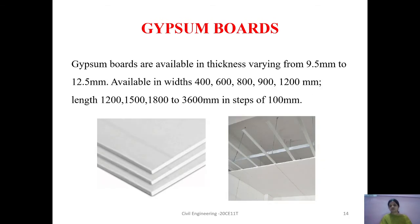Gypsum boards vary in thickness from 9.5 mm to 12.5 mm. They are available in widths of 400, 600, 800, 900, and 1200 mm, and in lengths of 1200 mm, 1500 mm, 1800 mm, and in increments of 100 mm up to 3600 mm. In these figures, we can see the gypsum boards and where they are used for walling as interior partition walls.